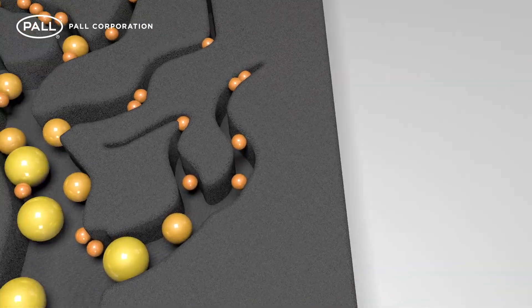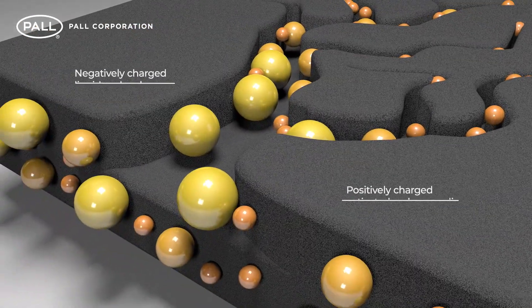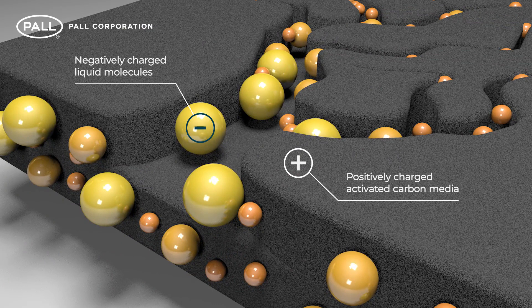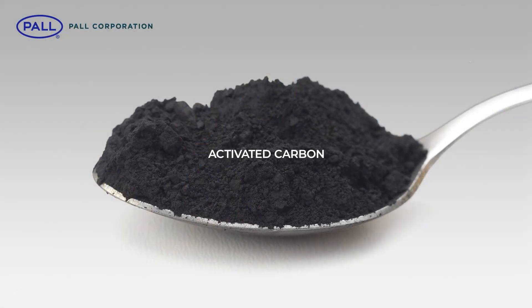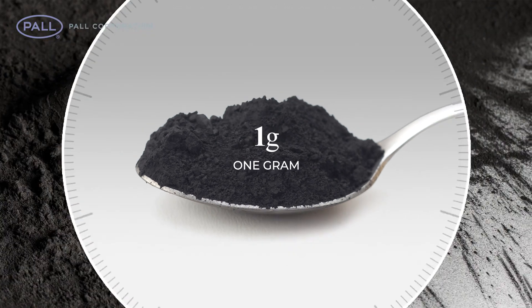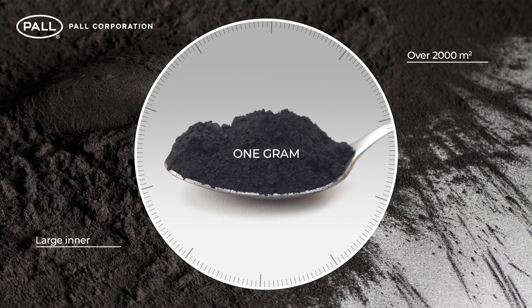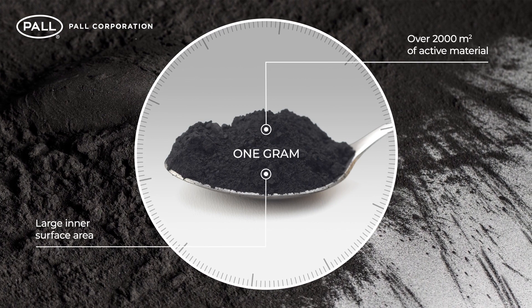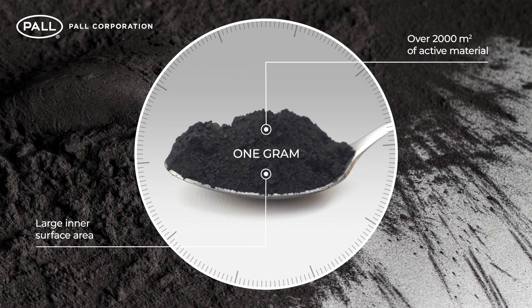In the case of activated carbon, atoms in the carbon pores attract the contaminant molecules in the process liquid. Activated carbon is a particularly effective adsorbent due to its large inner surface area. Typically, the inner surface of one gram equates to an area of over 2,000 square metres of active material.